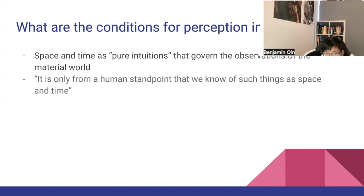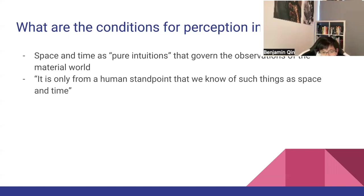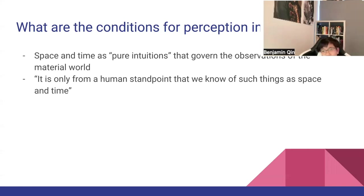Here's a quote from Kant: 'It is only from a human standpoint that we know of such things as space and time.' From about page 72 of the Critique of Pure Reason, he argues that space and time are perhaps purely concepts that the human species have created for convenience.